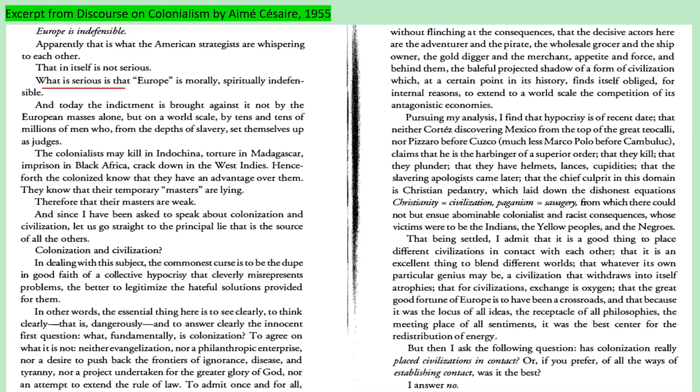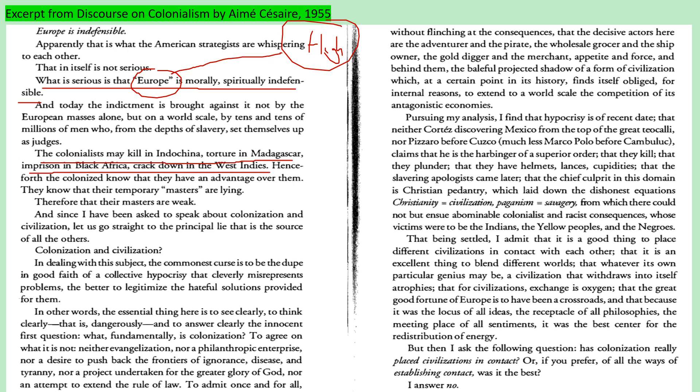The author writes that Europe is morally, spiritually indefensible. He's looking at Europe's actions — through imperialism, colonialism, and slavery — and questioning the Europeans' view of themselves as an example of high civilization. He writes: 'The colonists may kill in Indochina, torture in Madagascar, prison in Black Africa, crack down in the West Indies.' How is this an example of high civilization if you are treating people in such a manner? If you have a racist policy that views the inhabitants of another society as inferior, that doesn't mean everyone is going to share that viewpoint.